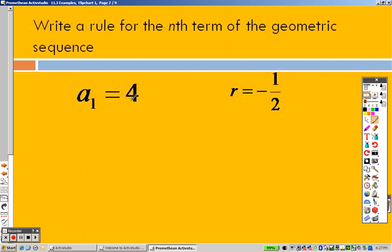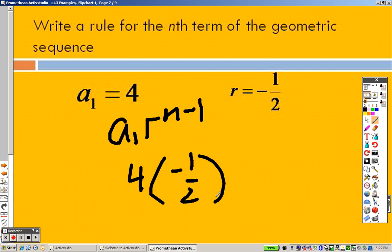This is just them telling you what the items are, right? They're saying what the first term is. They're saying what r is. So I just plug it in. 4, negative 1 over 2, n minus 1. Look at that. Done already.